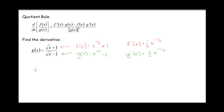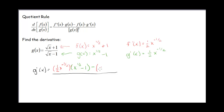Let's start plugging this in. So our g prime of x — we're going to open a big fraction bar here. I'm going to have my derivative of my f first, so that's 1/2 x to the minus 1/2, and I'm going to multiply that by my g, which is x to the 1/2 minus 1. Subtract. Then I just have plain old f, x to the 1/2 plus 1, times the derivative of my g, which is 1/2 x to the minus 1/2. And this is all over our g squared: (x to the 1/2 minus 1) squared. This is the answer — don't simplify this, it's a long process.